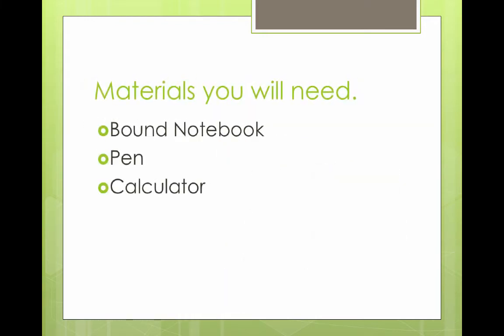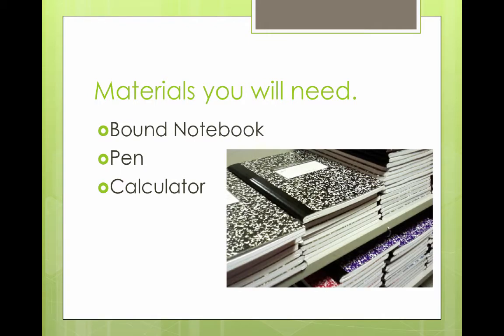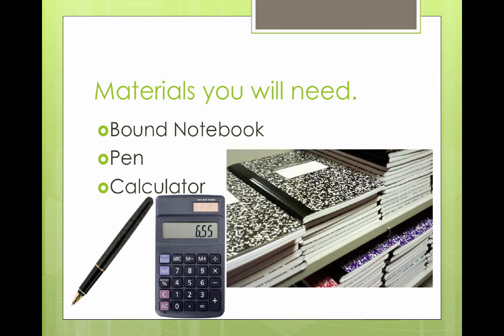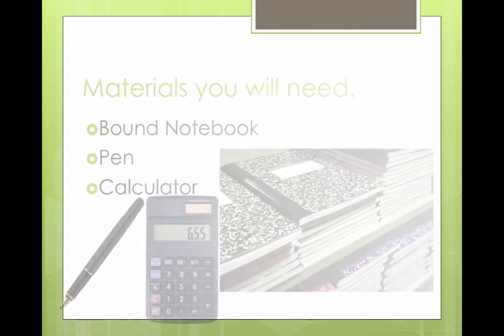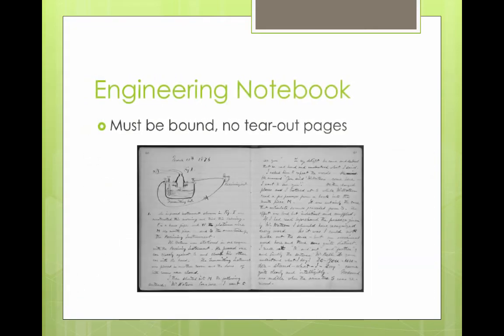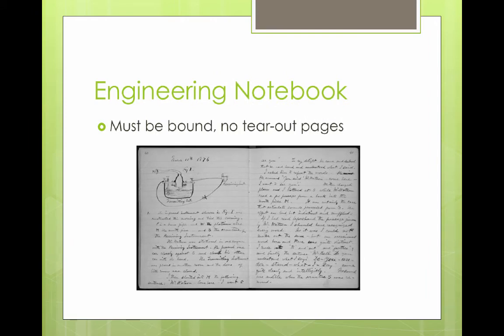The materials you will need for this class are pretty simple. You will need a bound notebook, a pen, and sometimes a calculator. You will not need a calculator every class, but it's best to have one with you. The bound notebook can be as simple as a composition notebook, available at most grocery stores. It can be lined or on graph paper, hard bound or paperback — whatever you're comfortable with — but it must be bound.